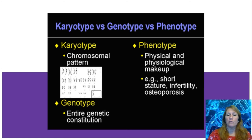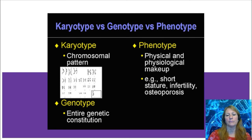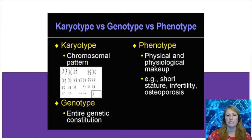Genotype refers to the genetic makeup — in genetic problems, you must account for both the dominant and the recessive allele. Phenotype is the physical makeup — what you actually observe. When Mendel was crossing his garden peas, he could observe tall and short plants, but he couldn't see the genetic makeup inside the plant causing those short plants to appear.